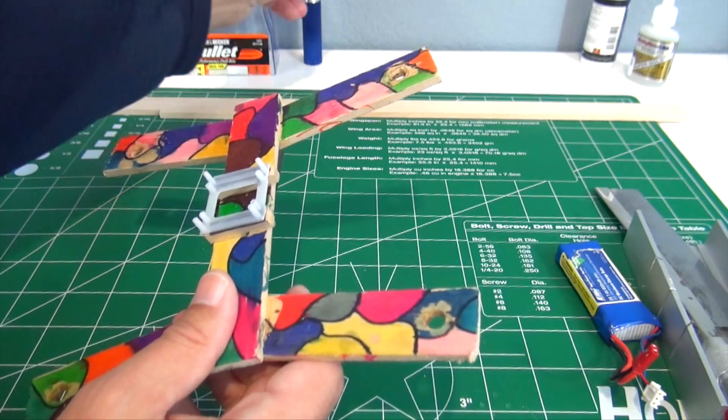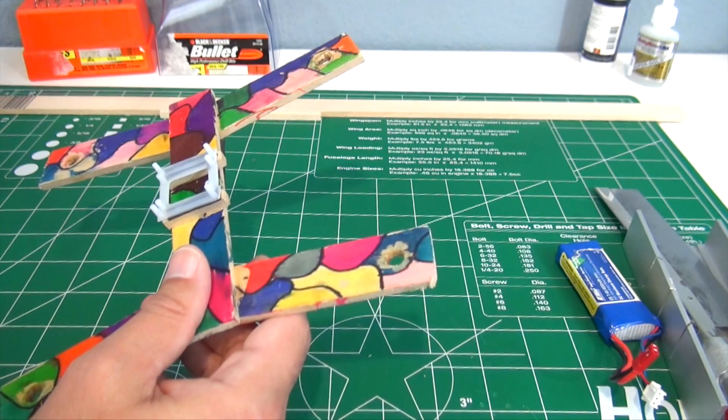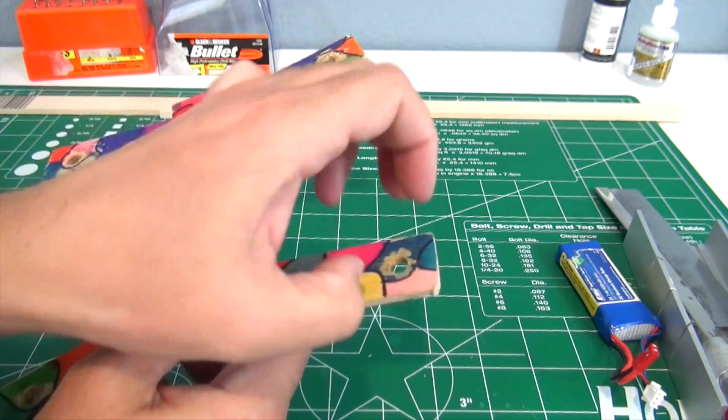And then if the motor doesn't quite fit through there, take a body reamer and just gently widen it out, because you don't want this hole to be so big that the motor is loose and wobbles around. You want it to be a pretty tight fit so that it doesn't move when you fly.